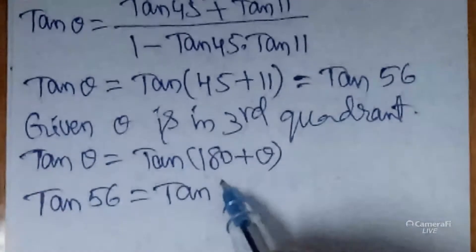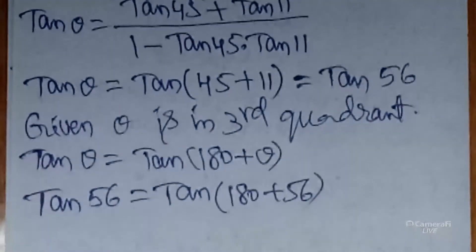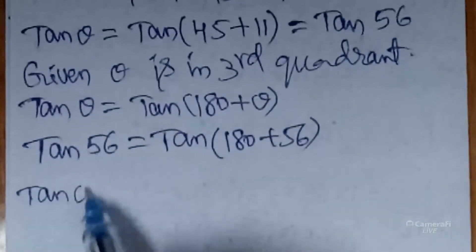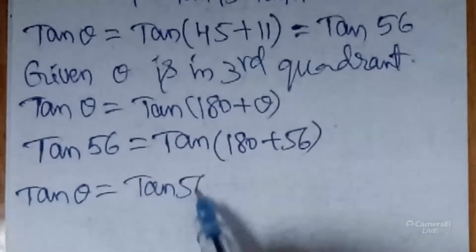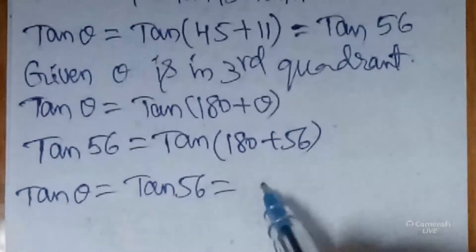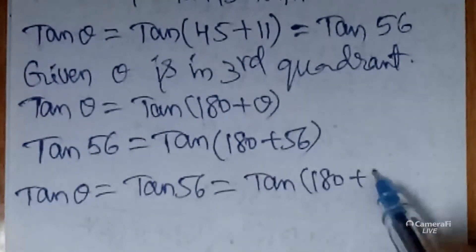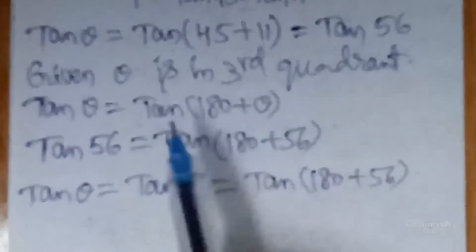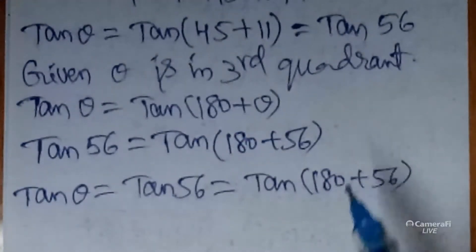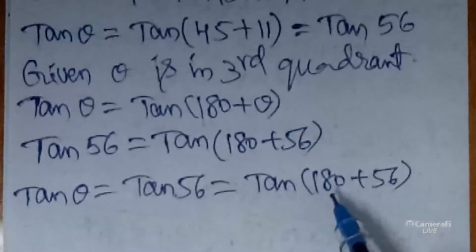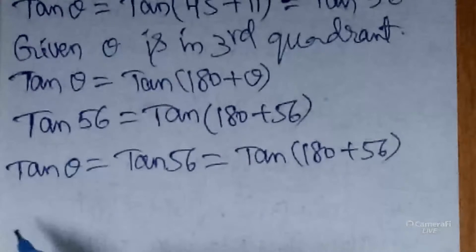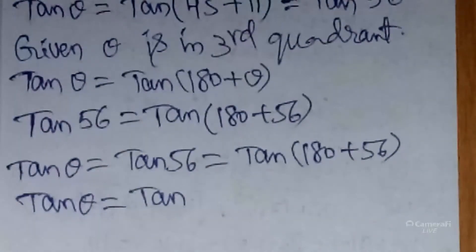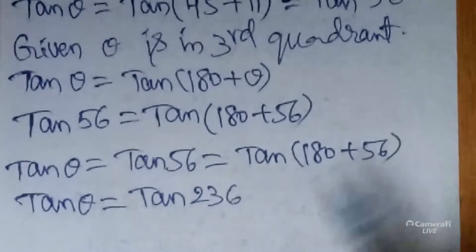tan 56 = tan(180 + 56), using this formula. So tan θ = tan 56 = tan(180 + 56). Why am I writing tan 56 as tan(180 + 56)? Because θ is in the third quadrant, and 180 + something means it lies in the third quadrant. That's why I am using tan θ = tan(180 + 56).